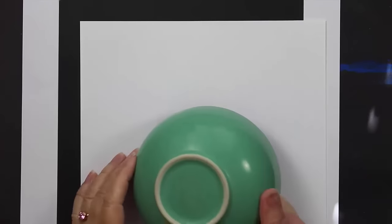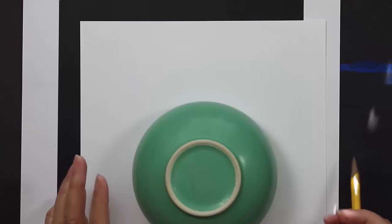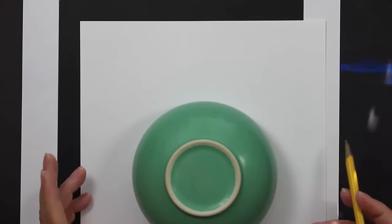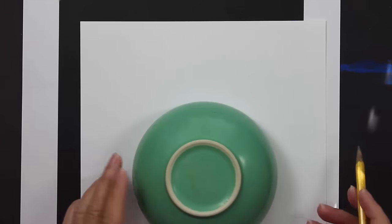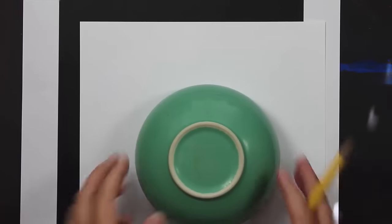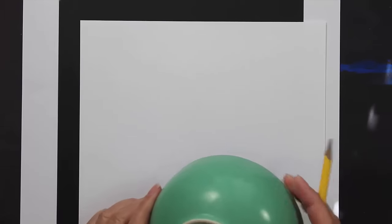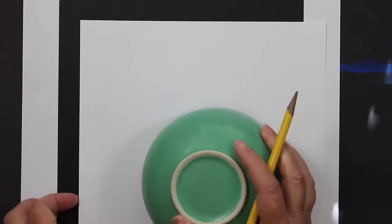All righty friends, so the first thing that you'll want to do is create a template for your project. A template simply means a guide for you to trace for your solar eclipse project. So what you want to do is find some sort of a bowl or a plate or another piece of paper that is round and that will fit on your piece of paper that you're going to actually do your artwork on. So I chose this bowl because I like the size.